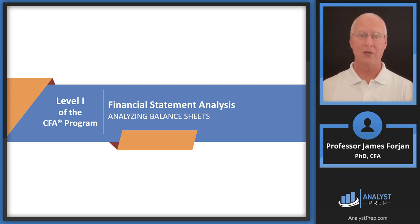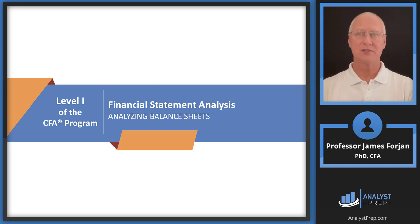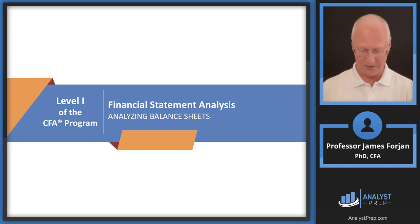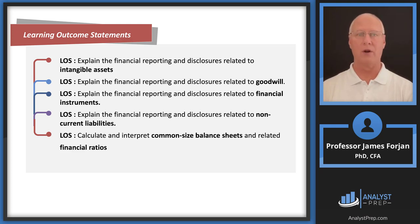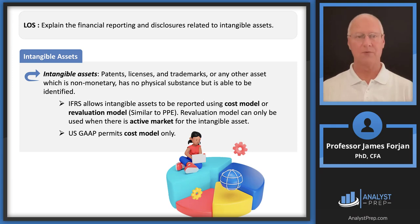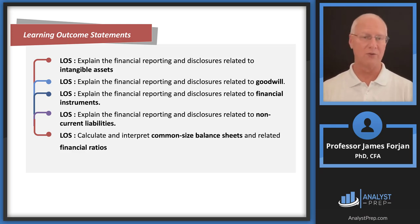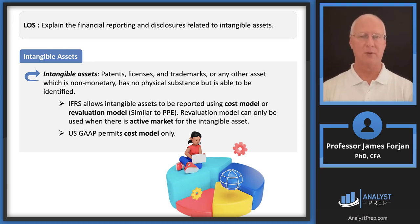The Institute doesn't ask us to do this mathematically with intangible assets, but from a non-quantitative perspective. So on the exam, look for ratio calculation questions and also questions about intangible assets and how they change in value over time. The LOSs cover four action verbs: explaining intangible assets, goodwill, financial securities, a short section on non-current liabilities, and then common size balance sheet and financial ratios.